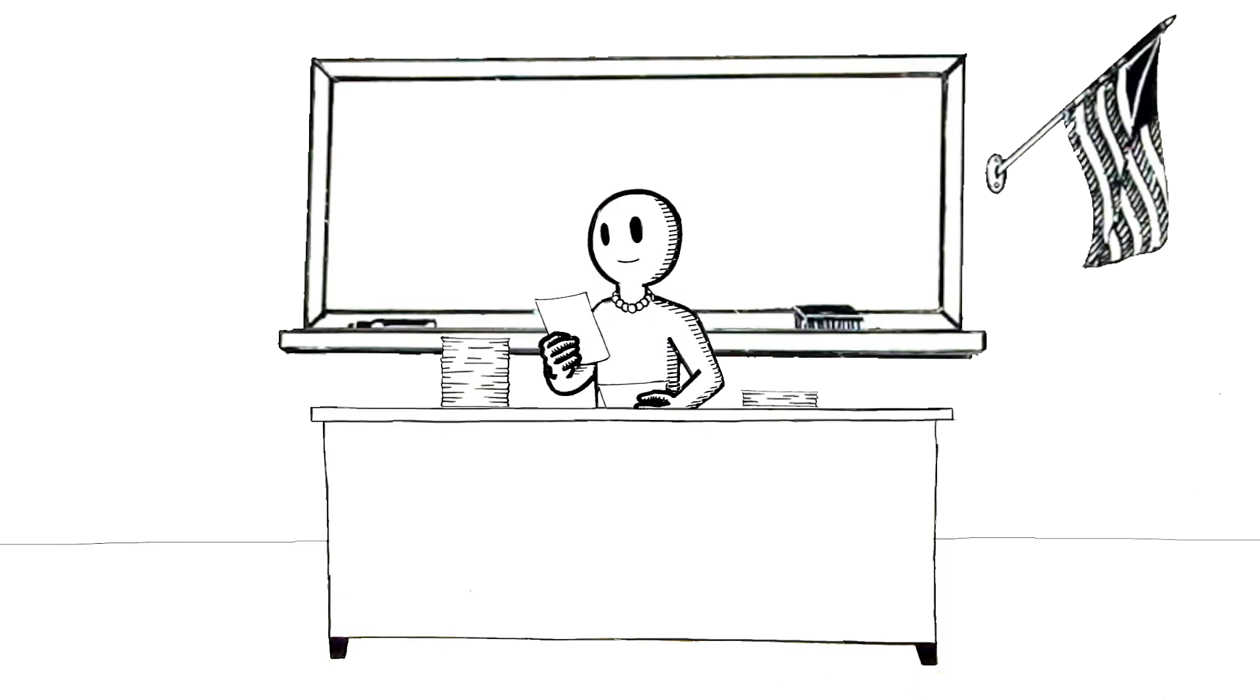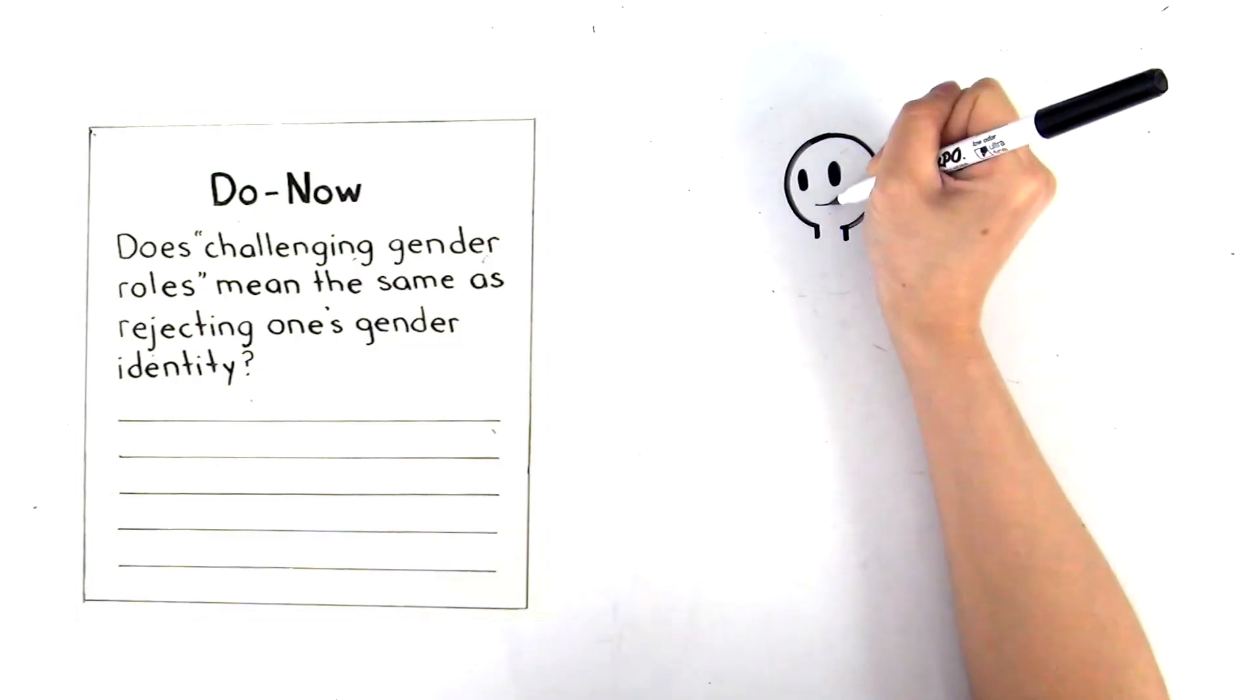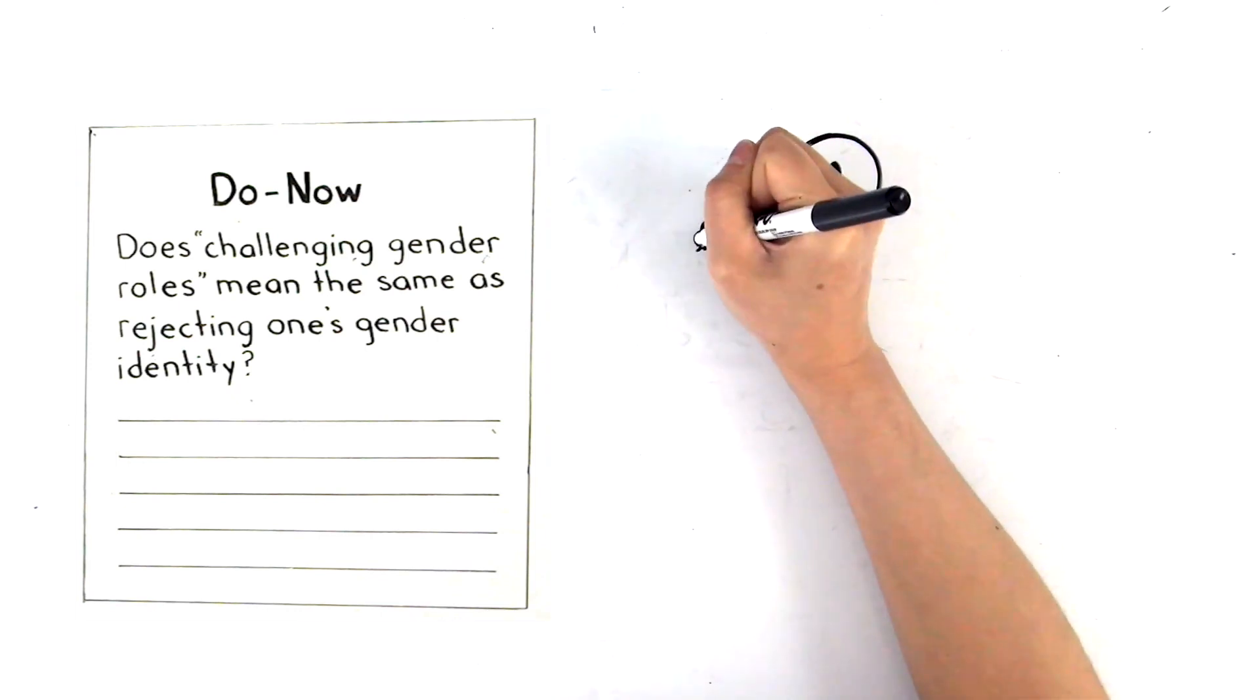And a stack of exit tickets is pure gold. Quickly sort the stack into two piles: kids who roughly got it and kids who didn't. Then flip through the tickets of kids who didn't get it and try to spot at least one common misconception or error.